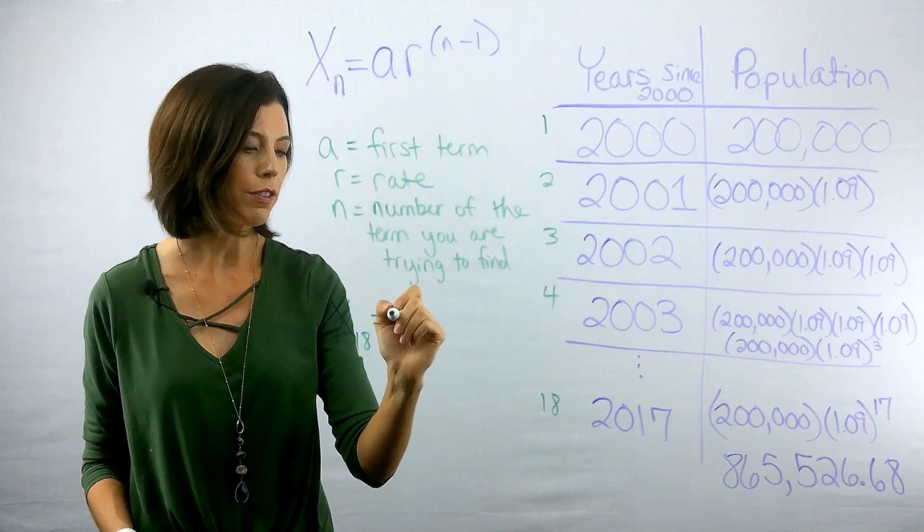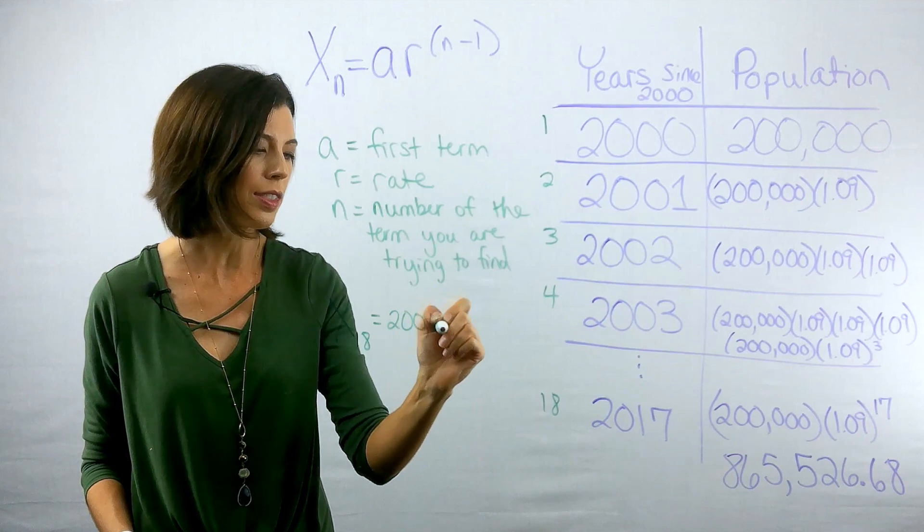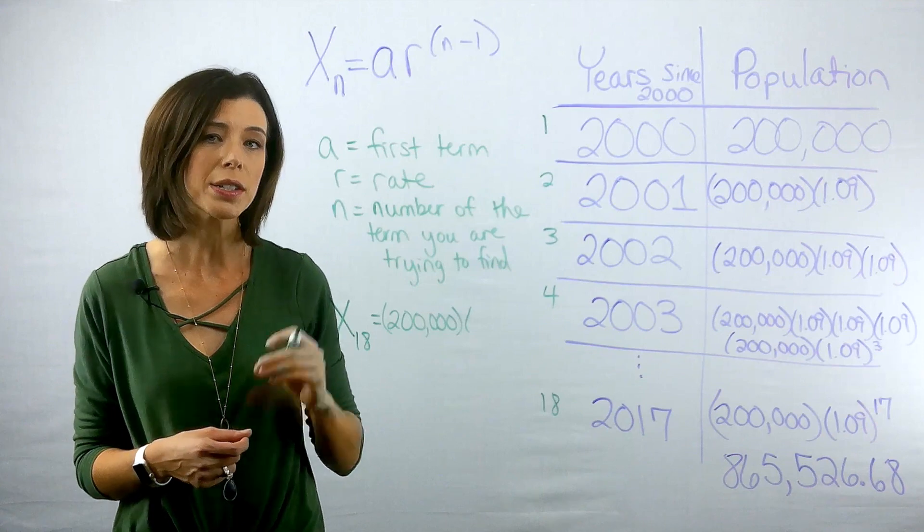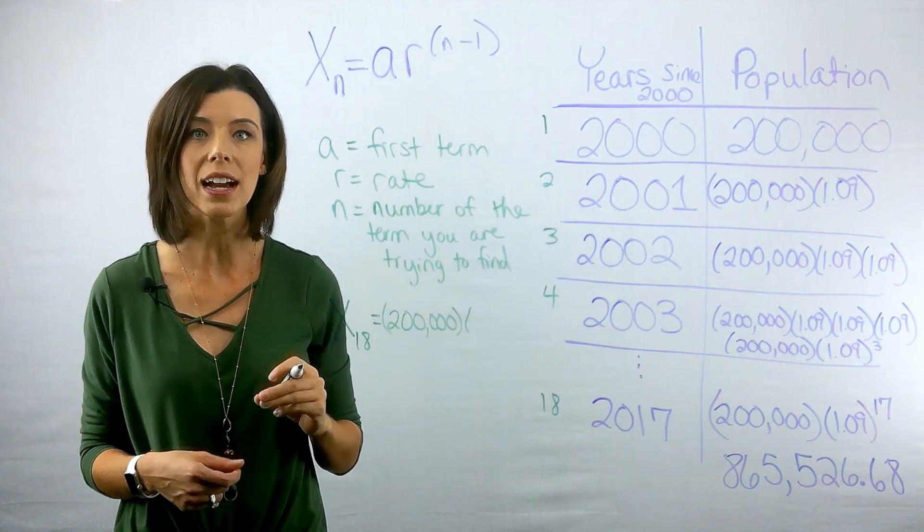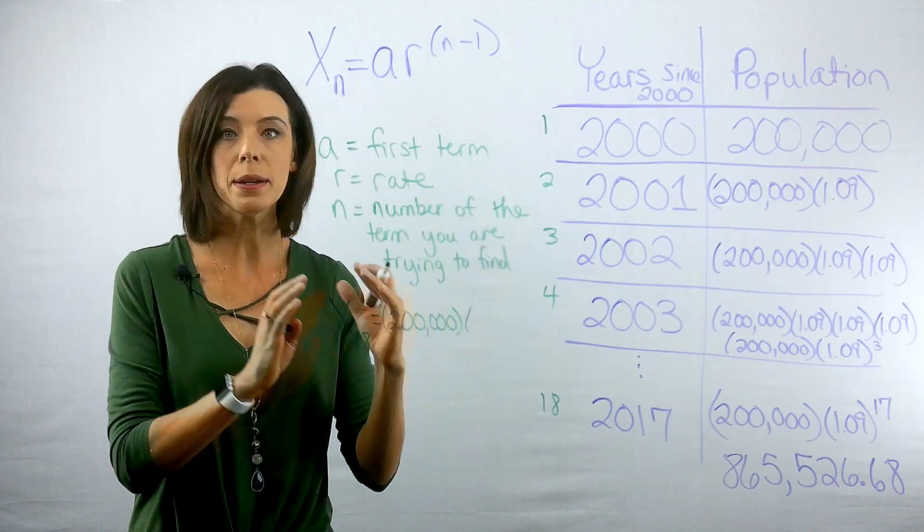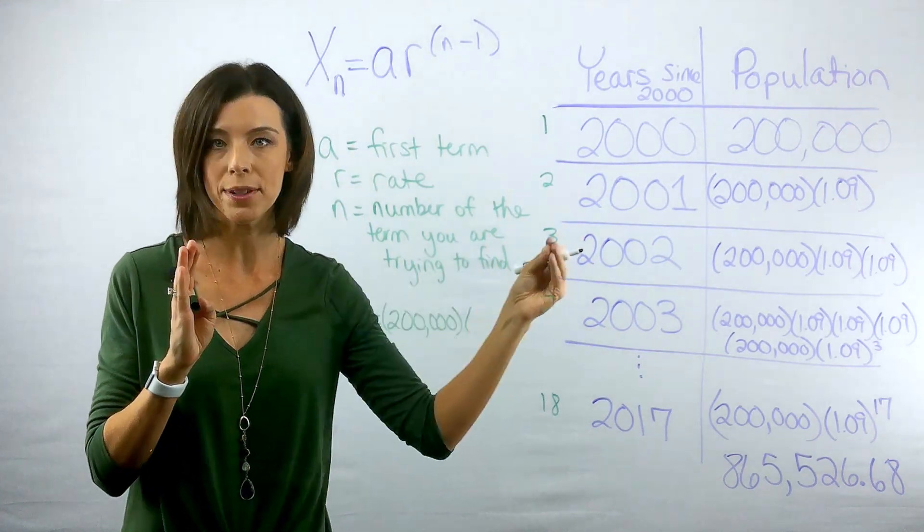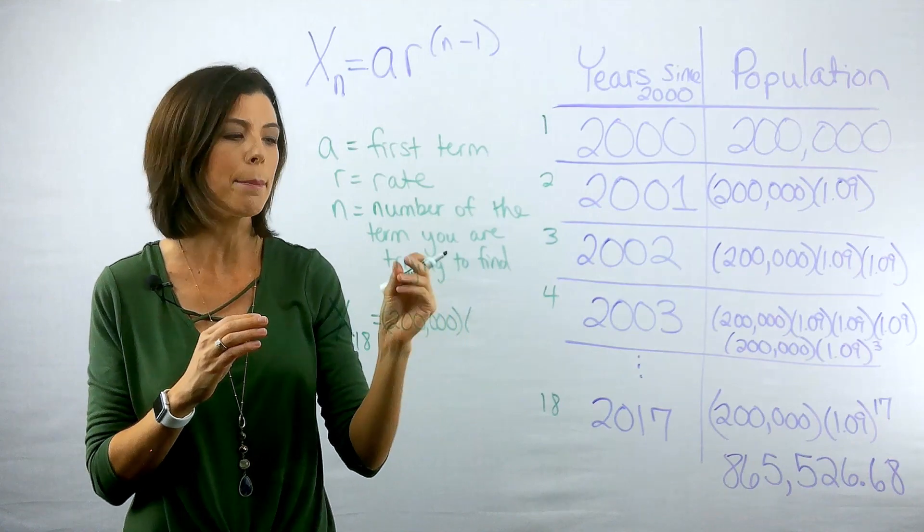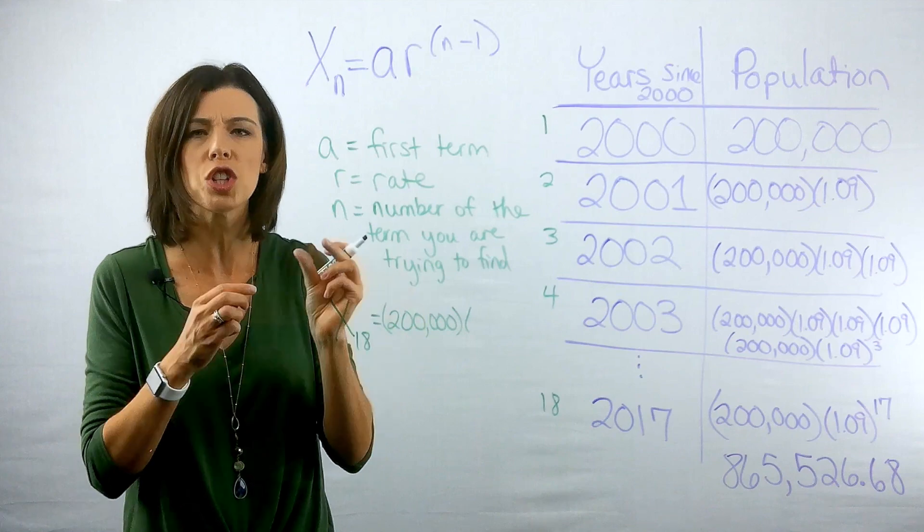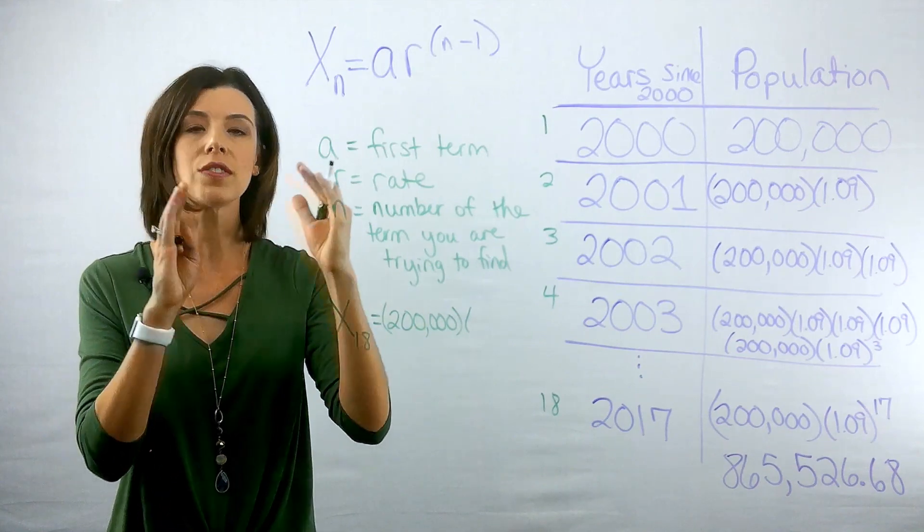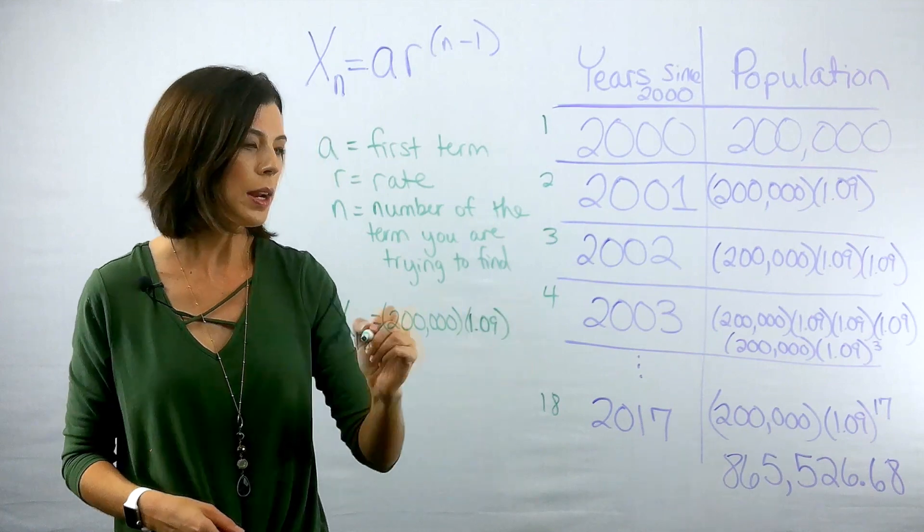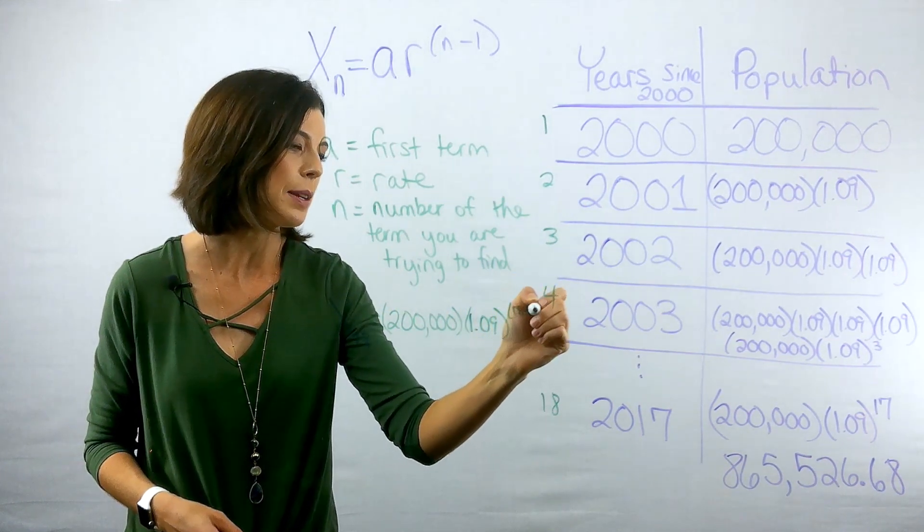Our starting number, our first term is going to be 200,000. I'm going to multiply that times my rate. Now remember, my rate is not just 0.09. My rate is actually 1.09 because I'm trying to take this number and increase it by not only that number but that 9% in addition. If you multiply it by 0.09, it's actually going to end up getting smaller. Does that make sense? Because you're just finding that piece of it versus finding the whole plus the piece. So here is my rate of 1.09, and then I'm going to raise that to the power of 18 minus 1.